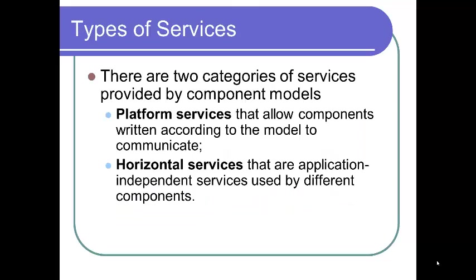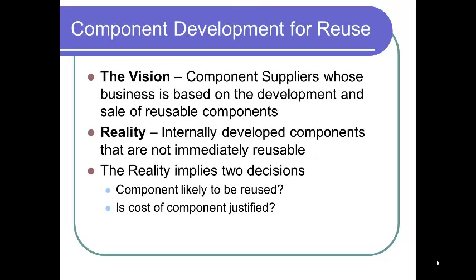There are two categories of services provided by component models. Platform services allow components written according to the model to communicate with one another. Horizontal services are application-dependent services used by different components. The vision is that component suppliers develop and sell reusable components, you purchase those that best suit your project, and snap them together to build the system. The reality is not as good — internally developed components are not immediately reusable and certainly not resaleable.